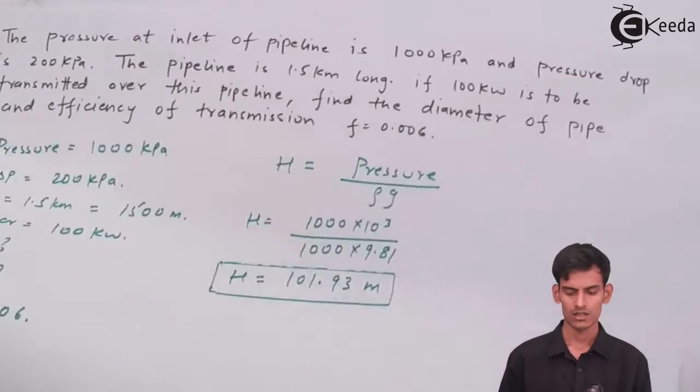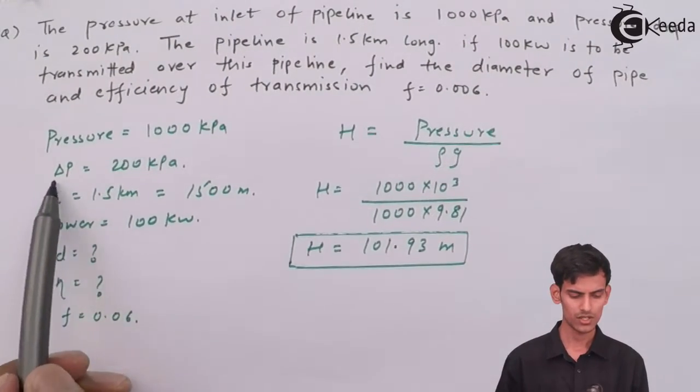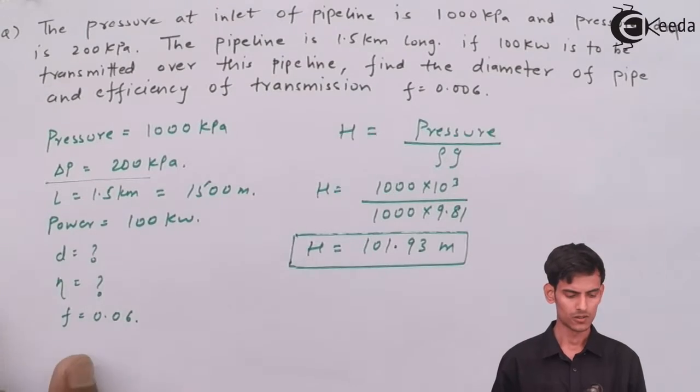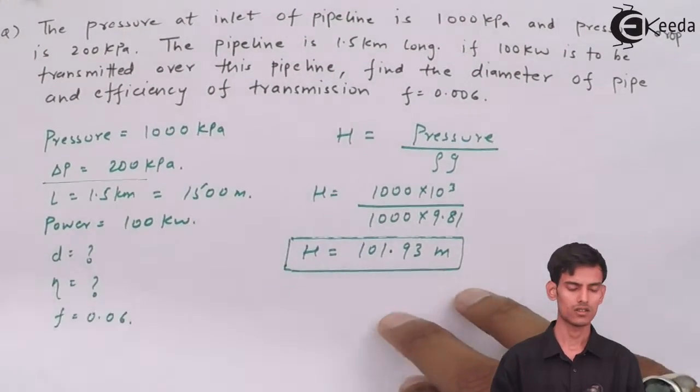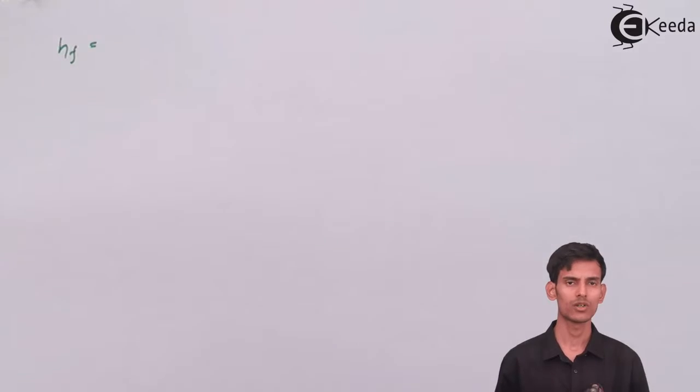Next thing is to calculate the head loss because of friction. To calculate the head loss because of friction, you should know the pressure drop. Directly the head loss is not given here. The pressure drop is given, so you can calculate the head loss by using the simple equation p equals rho g h. As you can see here, the pressure drop is 200 kPa. So head loss because of friction is nothing but pressure drop divided by rho g.